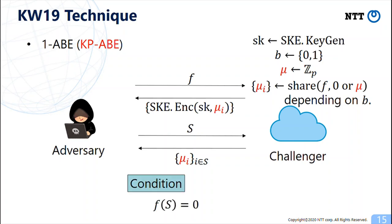SKE ciphertexts for secret shares correspond to the secret key for 1-ABE and secret shares for S correspond to the ciphertext in 1-ABE.